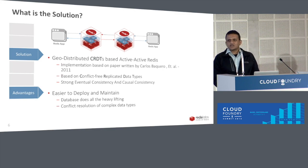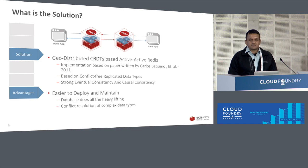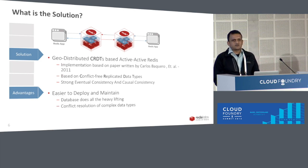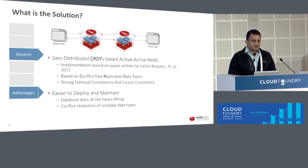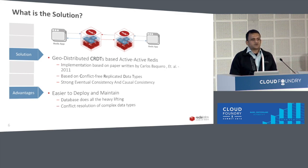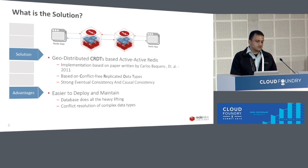One of the key things to highlight in this solution is that we achieve data replication through continuous synchronization, and the data reaches strong eventual consistency through the replication process. The database itself is doing all the heavy lifting of synchronization and retry logic, so the developer and Cloud Foundry application owner doesn't have to worry about those retry logics. Redis is known to be very simple and fast, and it takes care of conflicts during data replication using the conflict resolution built into the CRDT approach.